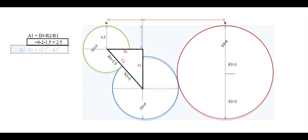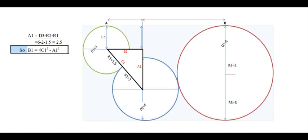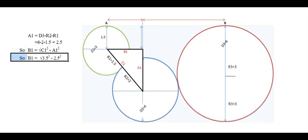The value of B1 will be square root of C1 square minus A1 square. So it will be square root of 3.5 square minus 2.5 square, which we can simplify as square root of 6.